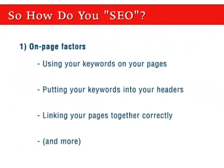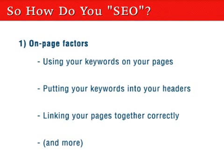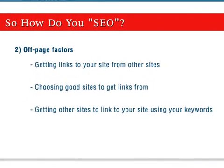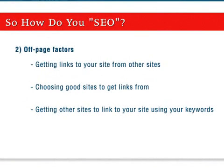Things you can do to help your search engine rankings tend to fall into two categories. On-page factors are things you can do to your website to increase your perceived relevance — these include things like using your keywords on your pages, using headers correctly, and linking your pages together correctly. Off-page factors are things that help your site look more relevant but aren't actually on your website — these include getting links to your site from other websites, making sure those websites are popular and relevant to your topic, and having links use certain text.